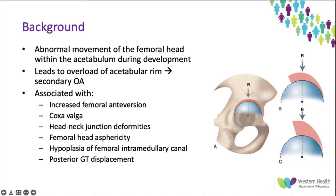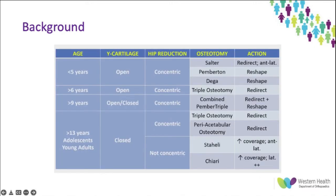Deformities associated in the long-term include increased femoral anteversion, coxa valga, head-neck junction deformities, femoral head asphericity, hypoplasia of the femoral intramedullary canal, and posterior greater trochanter displacement. Early identification of infantile hip dysplasia obviously optimizes long-term management and prevention is our best course.